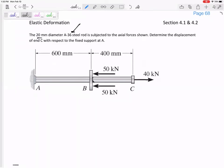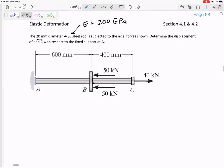20 millimeter diameter A36 steel. From the back of the book, it's E equals 200 GPa. I prefer MPa, but we'll see how our units will cancel out. So the E of that material is 200 GPa.